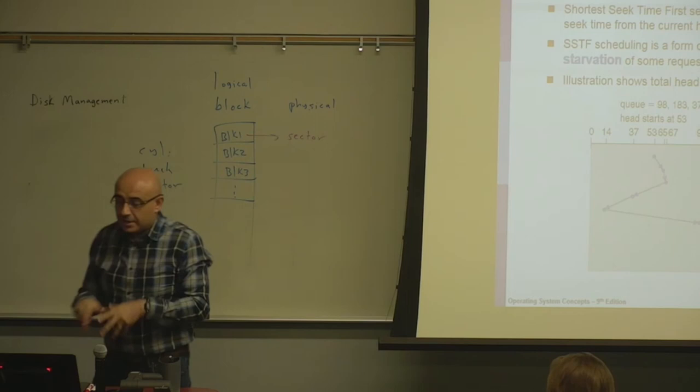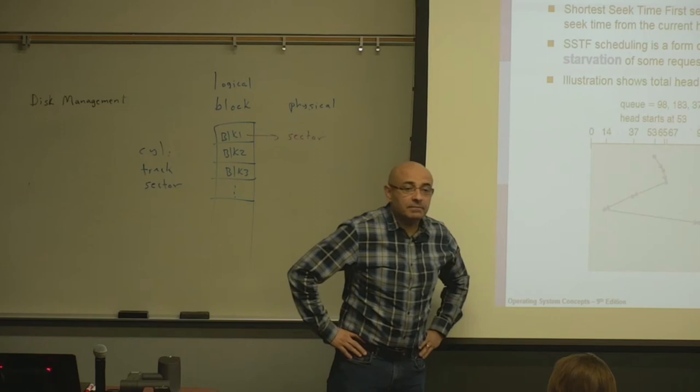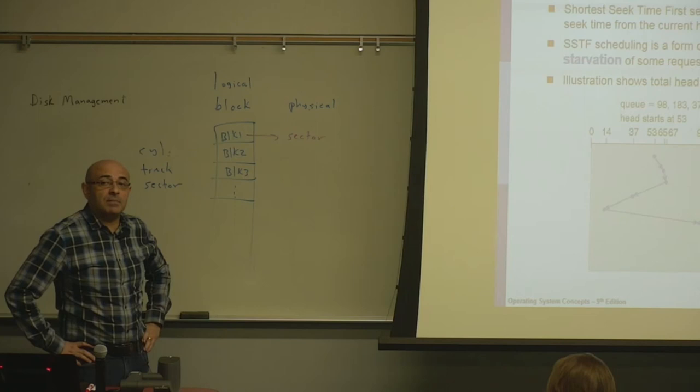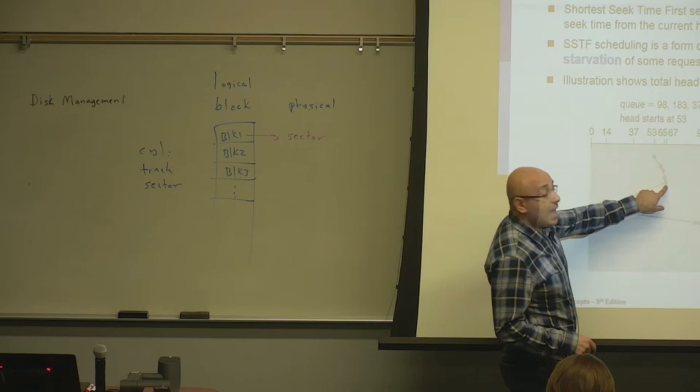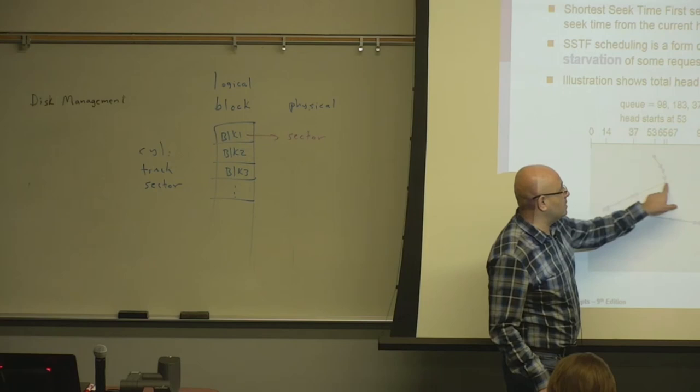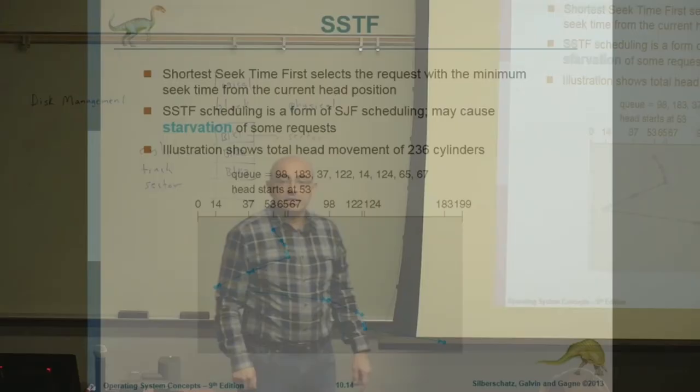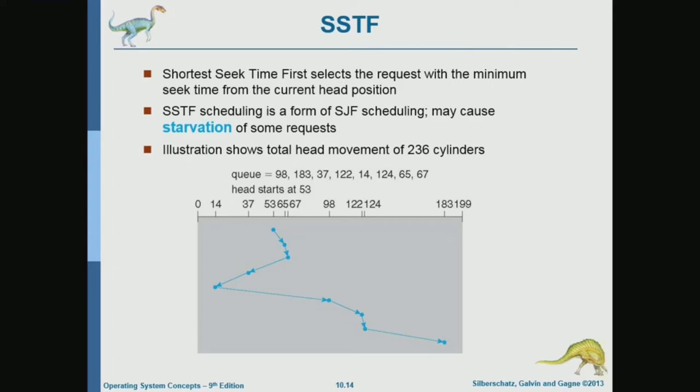Just like Shortest Job First in CPU scheduling, Shortest Seek Time First has the same problem, which is starvation. In this case, if we are at 65 and we keep getting requests for cylinder numbers close to 60, we'll get stuck there and all the requests for farther positions will never get serviced. So we will get starvation.